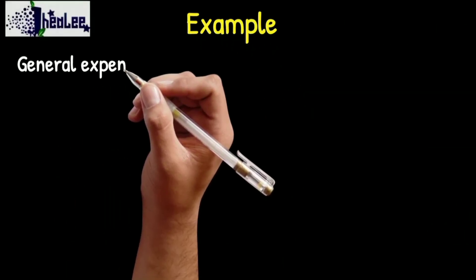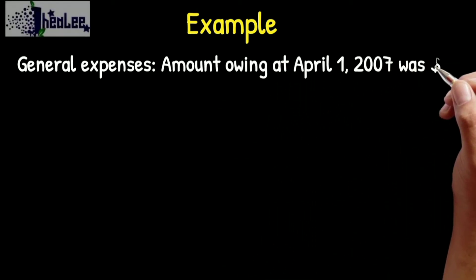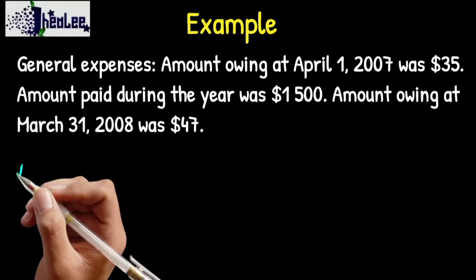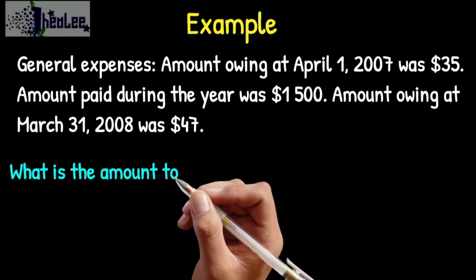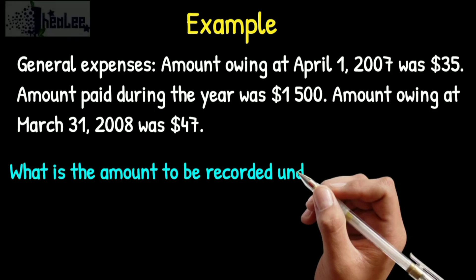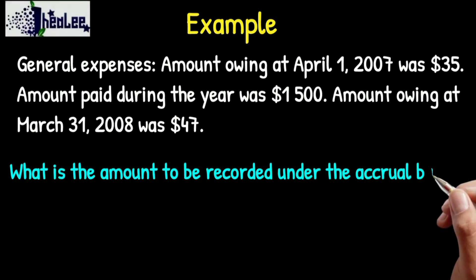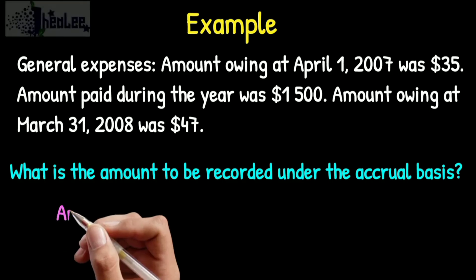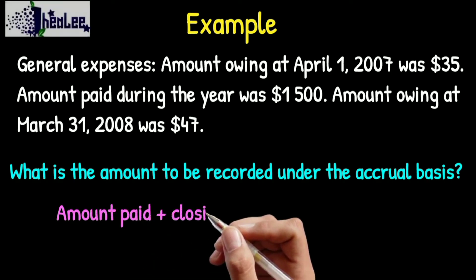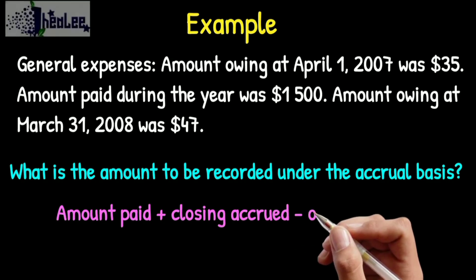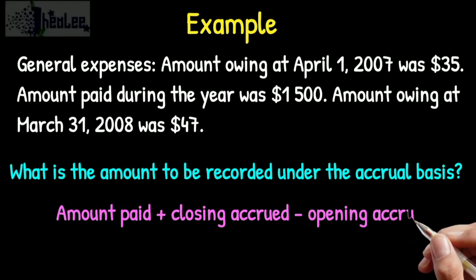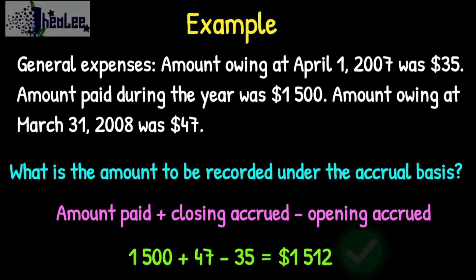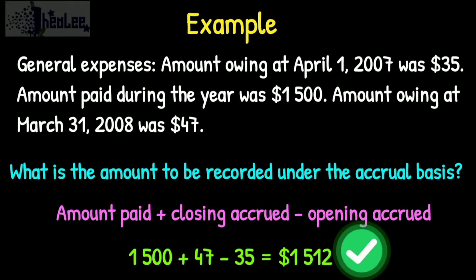We're going to use the same example to look at the accrual basis. Amount owing at April 1st, 2007 was $35; amount paid during the year was $1,500; amount owing at the end of the year is $47. What is the amount to be recorded under the accrual basis? To get this, it is the amount paid plus closing accrued minus opening accrued, since we're looking at what is incurred for the year. That is $1,500 plus $47 minus $35, which gives us $1,512.